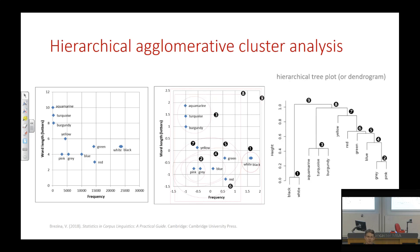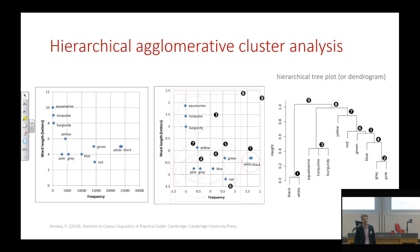The hierarchical tree plot or dendrogram translates the spatial grouping into a tree. Black and white are grouped first, then others in order. Ultimately you end up with everything grouped — that's when you draw a circle around the whole thing. The height of the graph shows the distances between the individual points.